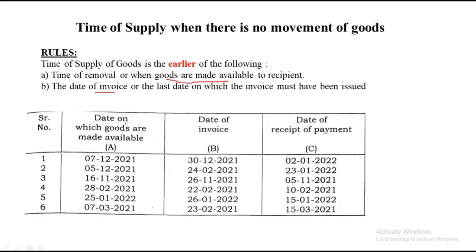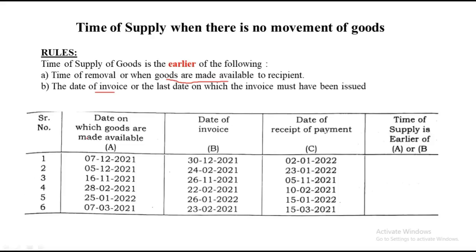The key phrase is 'goods made available.' The moment you see 'goods are made available' in a question, understand it is a sum where there is no movement of goods. We have been given the date on which goods are made available, date of invoice, and date of payment. The rule is: whichever of the goods-available date or invoice date is earlier becomes the time of supply. For example, 7th December and 30th December — 7th December is earlier, so 7th December is the time of supply.